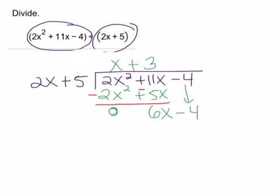And we'll take this 3 and distribute it just like we did with the x. Okay, so 3 times 2x is 6x. 3 times 5 is 15.